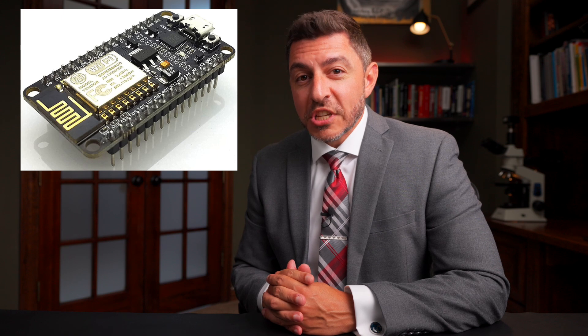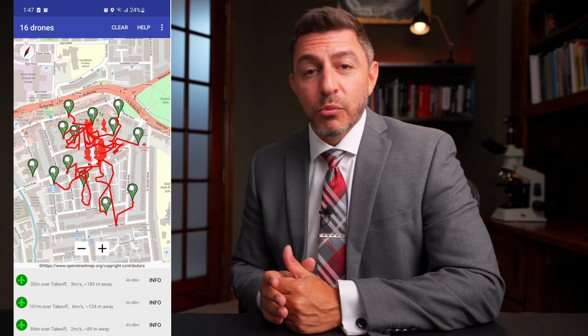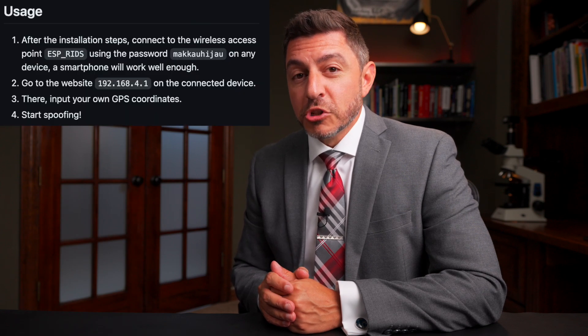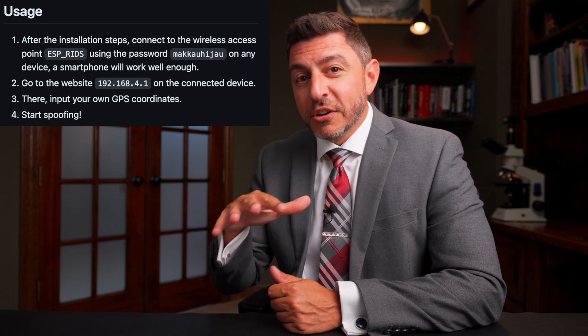This spoofer uses an ESP8266 and was written by someone who goes by Jet. It will transmit fake drone packets to make it look like a bunch of drones are flying around whatever location you specify. When you first turn it on, it allows you to enter GPS coordinates and the drones will all appear to fly around that area. This is likely illegal to use — the FAA would almost certainly have a problem with it — but nonetheless it exists.